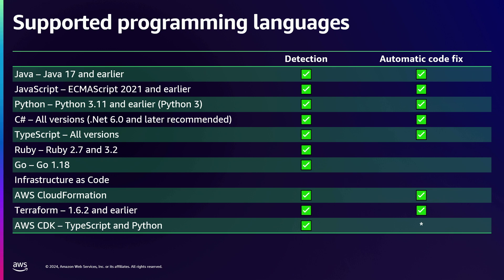We support a number of programming languages. If something you're using isn't listed, please let us know and we'll schedule support for it. Supported languages include Java 17, JavaScript, Python, TypeScript, Go, and Ruby. We have some support for Rust as well, though it's not necessarily supported for scanning. We also support Terraform — a lot of you are probably using Terraform for infrastructure as code, and we have a very good partnership with HashiCorp, so whenever changes happen on both ends we fine-tune our models. We support CDK as well, and we do have automatic code fixes for some of these languages.